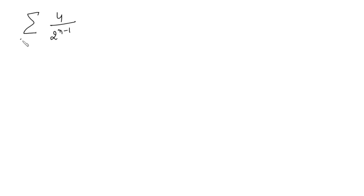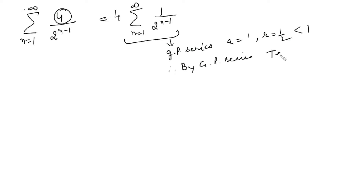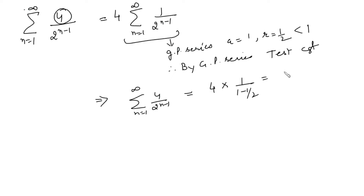Next, check the behavior of the series ∑ 4/2^(n−1) for n from 1 to infinity. Take the constant 4 outside and check ∑ 1/2^(n−1), which is a GP series with first term 1 and common ratio 1/2 < 1. By the GP series test, it's convergent. By the constant multiple rule, ∑ 4/2^(n−1) is also convergent and converges to 4 · 1/(1−1/2) = 8.